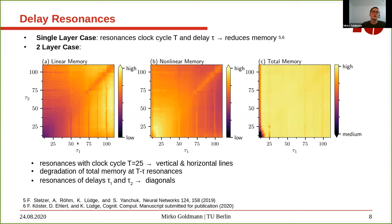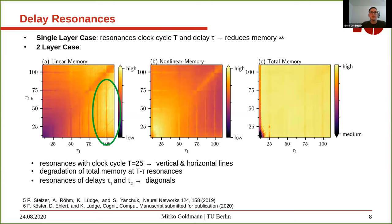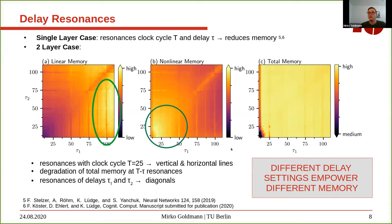There is always a trade-off between linear and nonlinear memory. Linear memory is high in regions where delay tau_1 is large and delay tau_2 is lower. If both delays are short and in the same region, we have high nonlinear memory. Therefore, different delay settings empower different types of memory, and this is something we exploit in the next part — deep systems enable the tailoring of their memory.